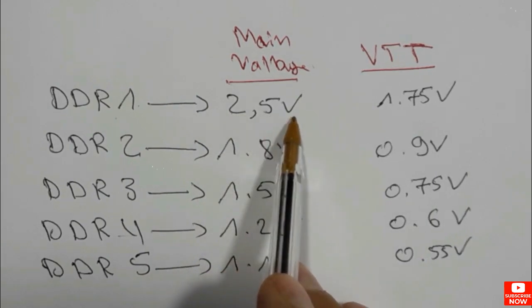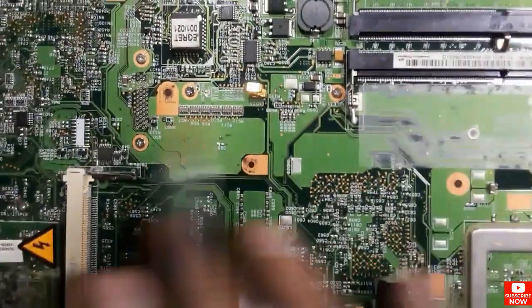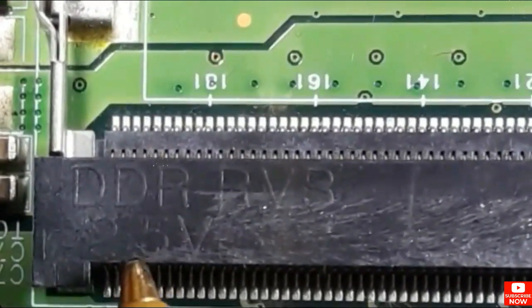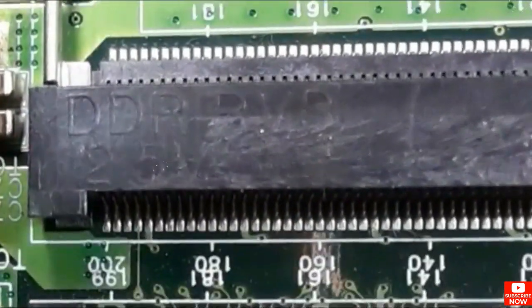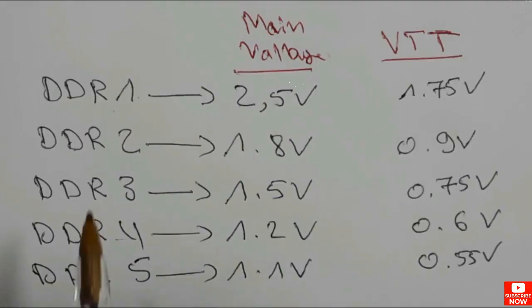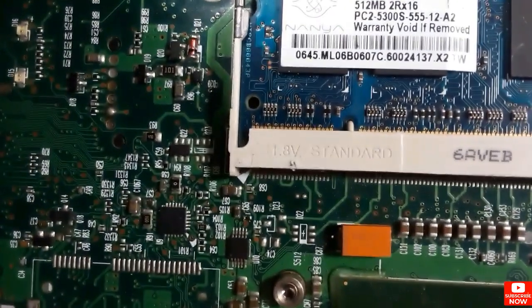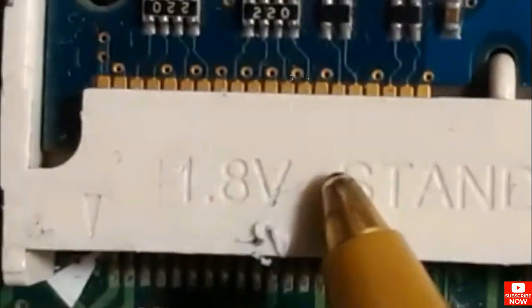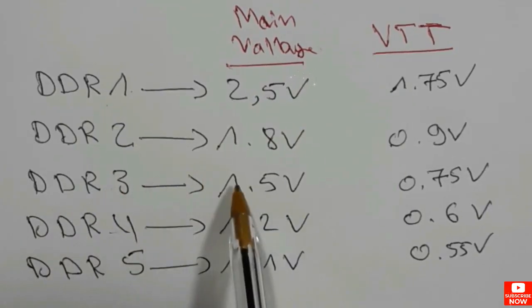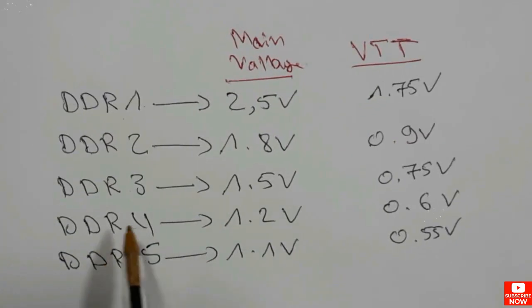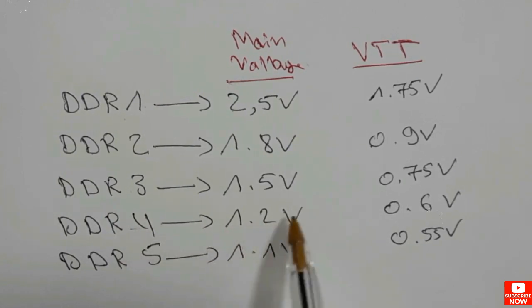Here is an example: a motherboard with DDR1 RAM showing 2.5 volts in the slot. For DDR2, this example shows 1.8 volts. For DDR3, this example shows 1.5 volts. For DDR4 it is 1.2 volts, and for DDR5 it is 1.1 volts — these are very improved RAMs.